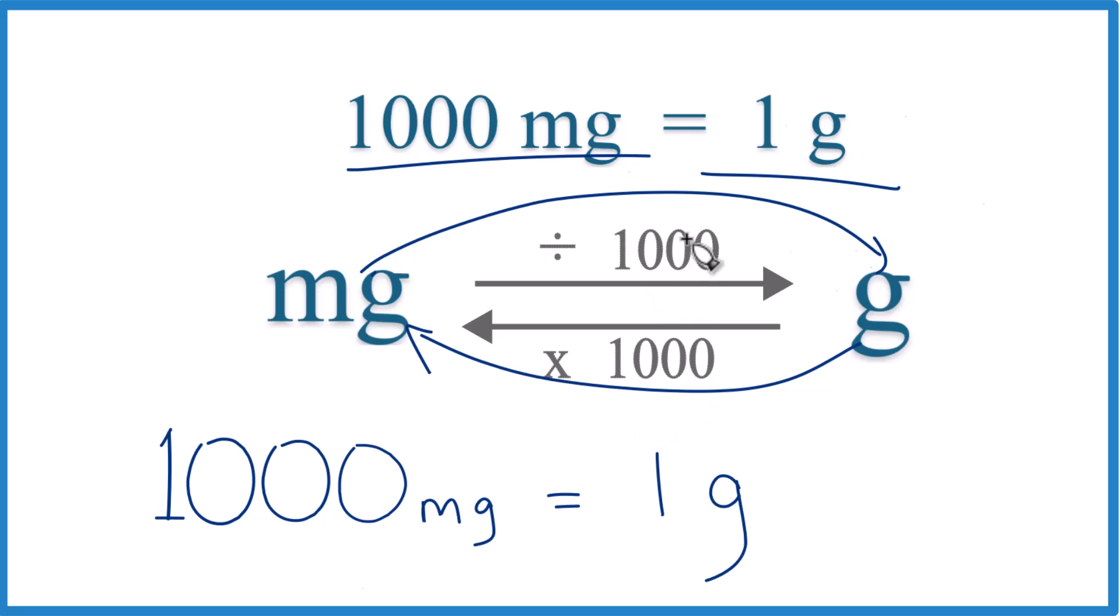So this is the conversion factor we use. And this is really something you have to commit to memory. Or if you're allowed, sometimes if you're taking a test, teachers will give you tables or a page of different conversion factors. But this is so common that I would recommend that you just commit this to memory.